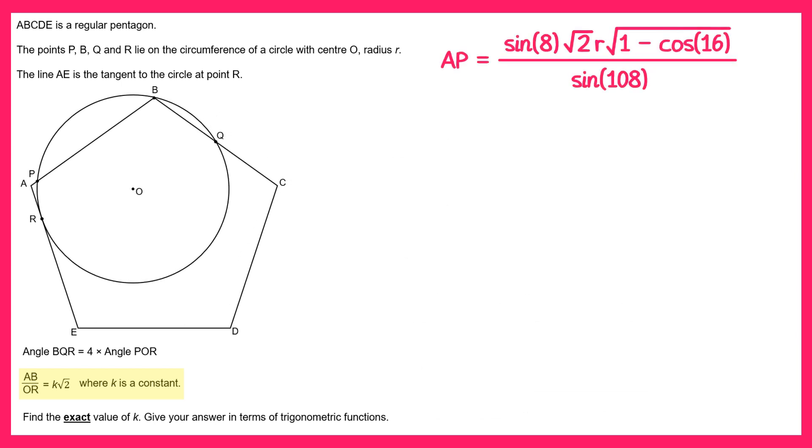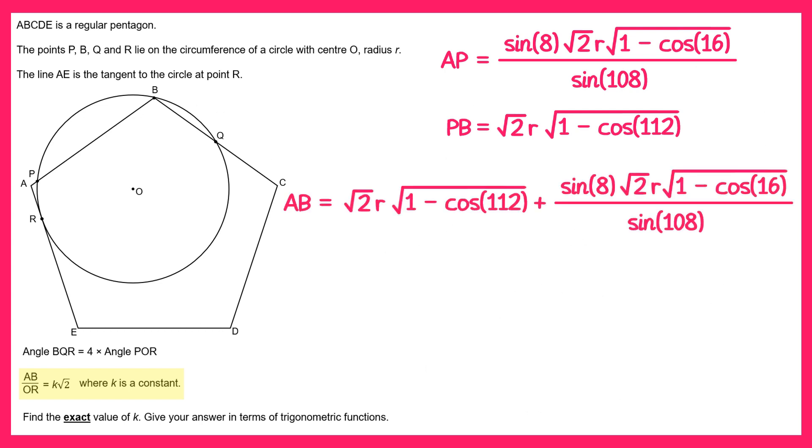Now we managed to work out what AP was and we also found PB. And in the question we're asked for AB so AB must just be the sum of these two. So AB equals this. We can factorise out the square root 2 and also the R from both of these terms so you get AB equals square root 2R and then all of this.